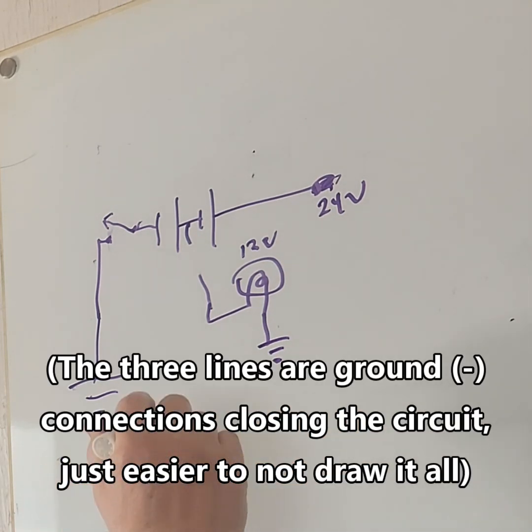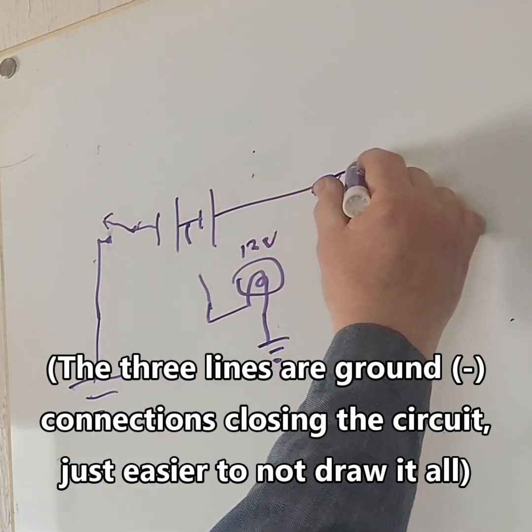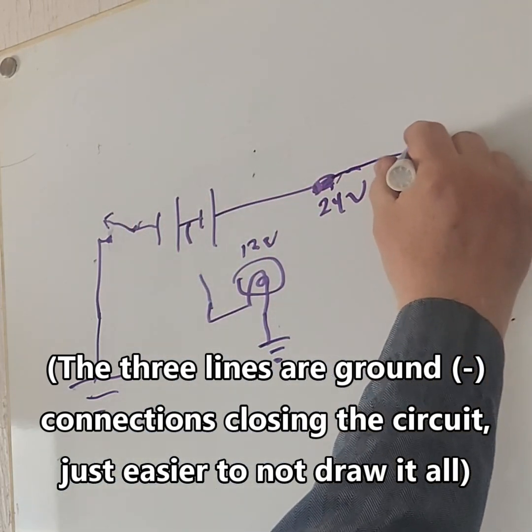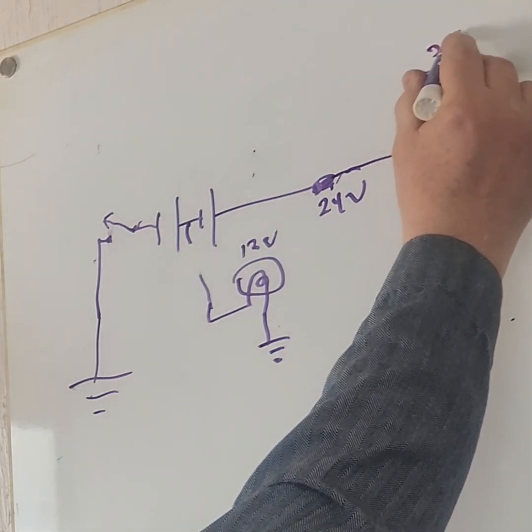And we have a 24 volt light that comes from here and it's a light, and it's a 24 volt light.